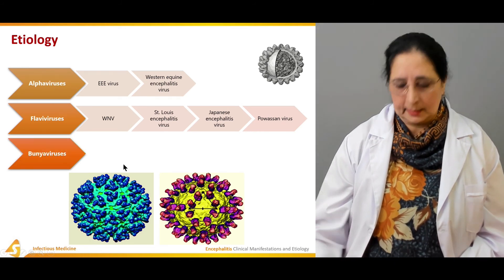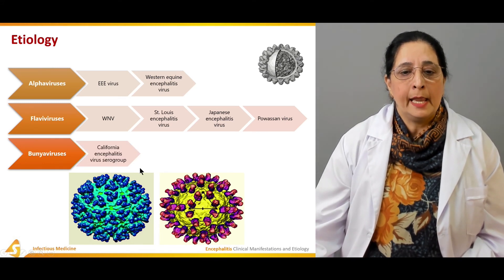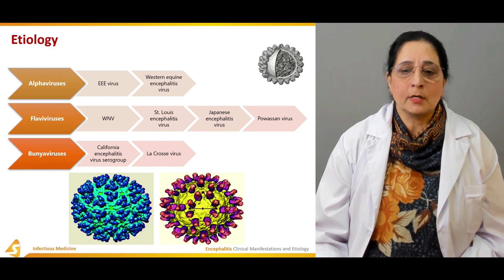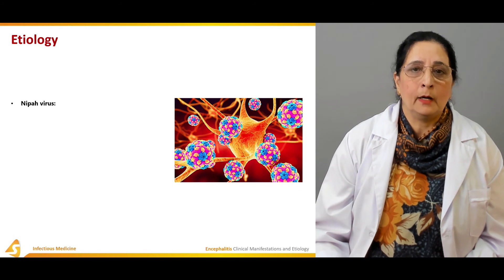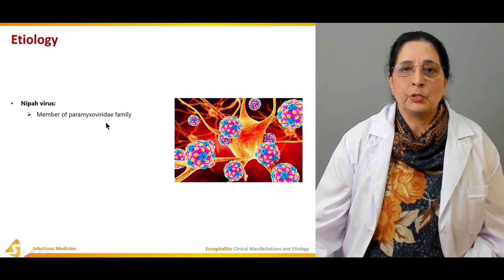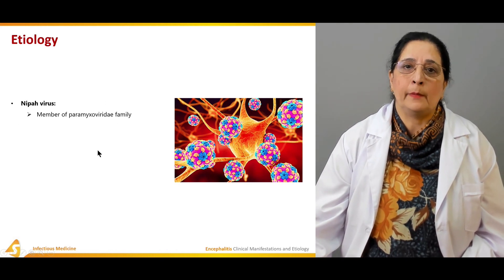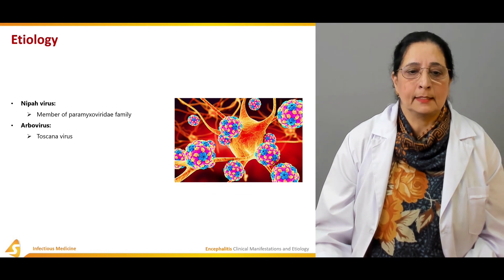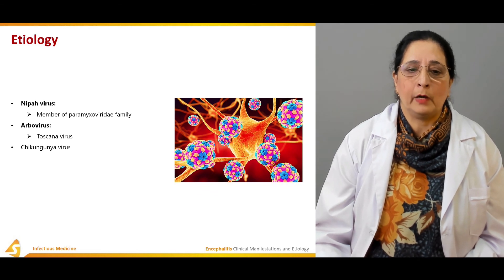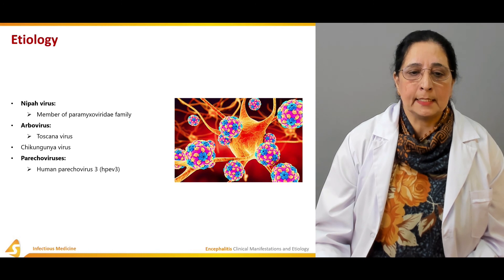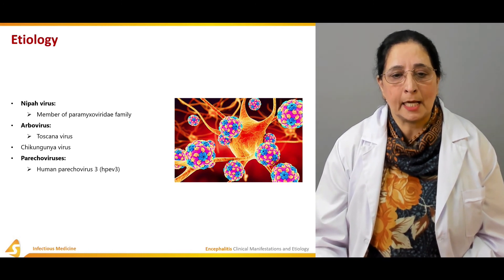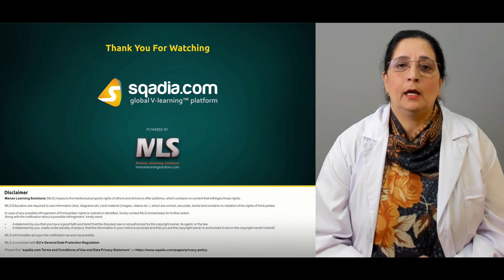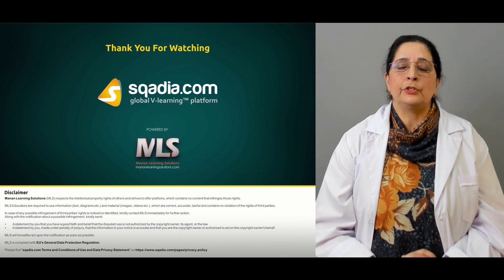Bunia viruses include the California encephalitis virus O group and La Crosse virus. We also have Nipah virus, a member of the Paramyxoviridae family. Arboviruses include Toscana virus and Chikungunya virus. Finally, piconoviruses such as Human Parechovirus type 3 (HPEV3) can also cause viral encephalitis.